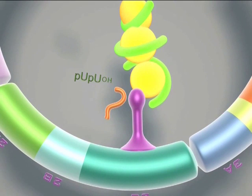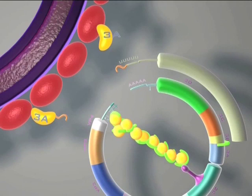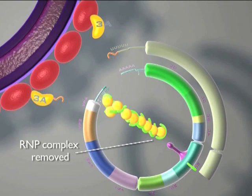The ongoing VPG uridylylation is thought to be terminated by the elongating polymerase reaching the CRE element and causing once again the breaking of the RNP complex.